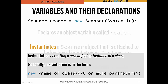We've seen instantiation before, but really you just want to hit home that it's of this form: the keyword new, whatever the name of the class that we're instantiating an object of, and then inside the parentheses, however many parameters that constructor — that method, we'll discuss more what that means later — takes.